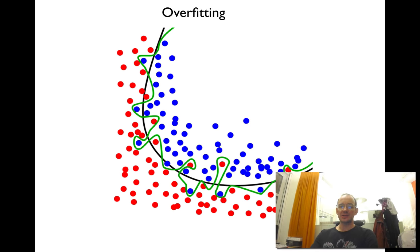An important problem in machine learning is avoiding overfitting. Look at these examples of classifying red and blue dots from each other. You have two different functions: the green line and the black line. Which one do you think is best?